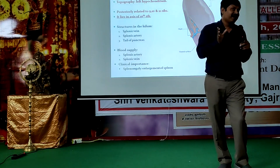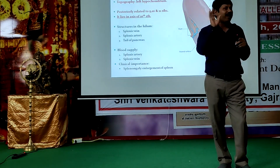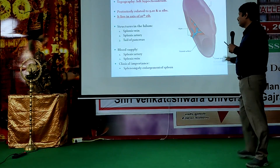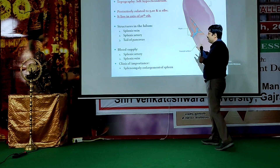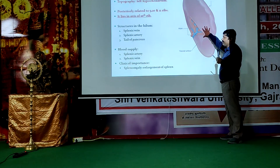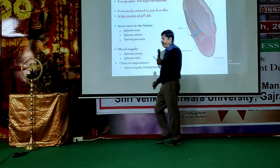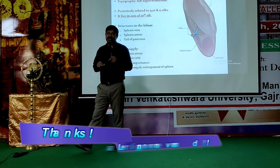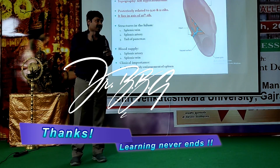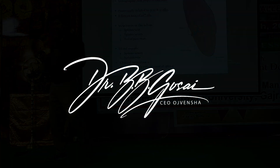Splenomegaly is enlargement of the spleen. Common conditions causing it include malaria and leukemia. The most important clinical point to remember is that the tail of the pancreas is closely related to the hilum, which is important during splenectomy when ligating the splenic vessels.